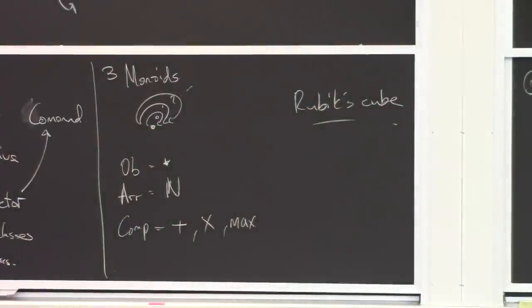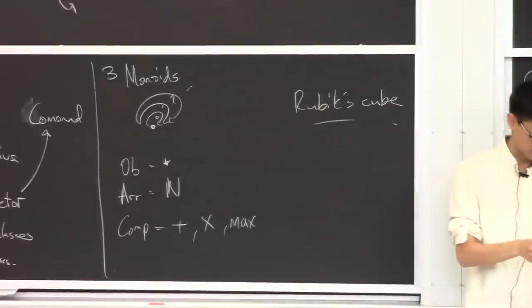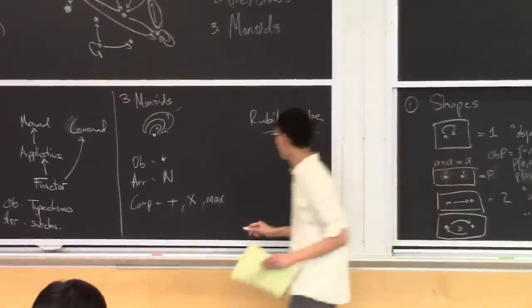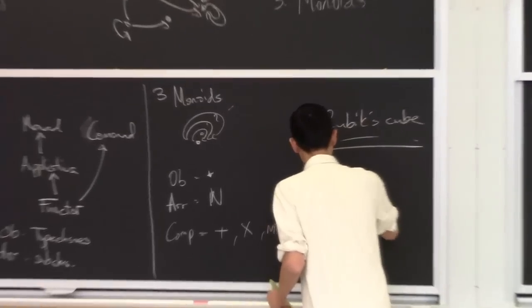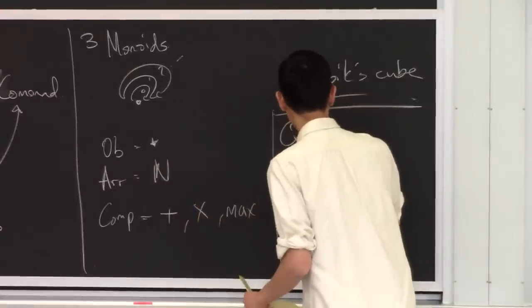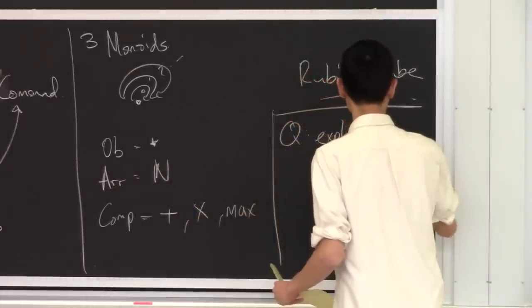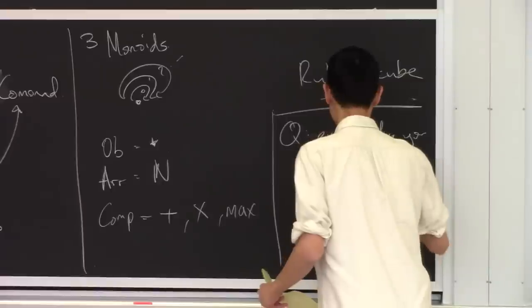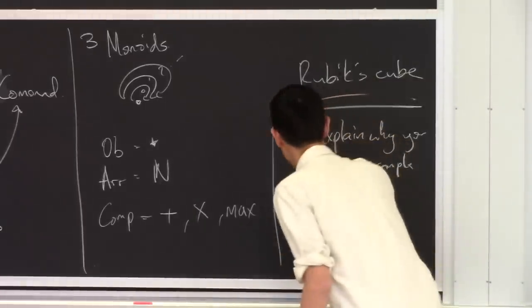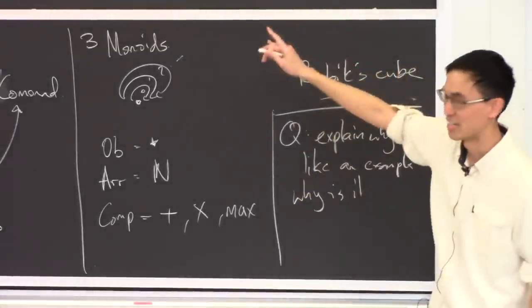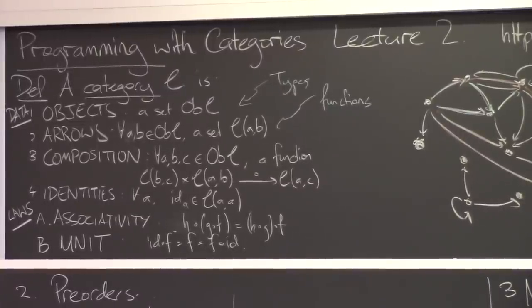That was a bunch of material, so let's take a break. Here's a task: find someone nearby, say hi, and then pick one of these categories. Explain why you like the category, and also explain why it is a category — what are its objects, morphisms, and so on. In particular, tell them why it satisfies the associativity and unit laws.